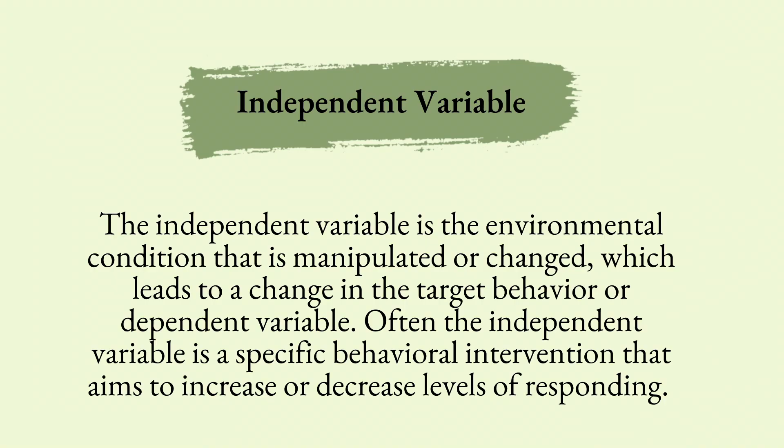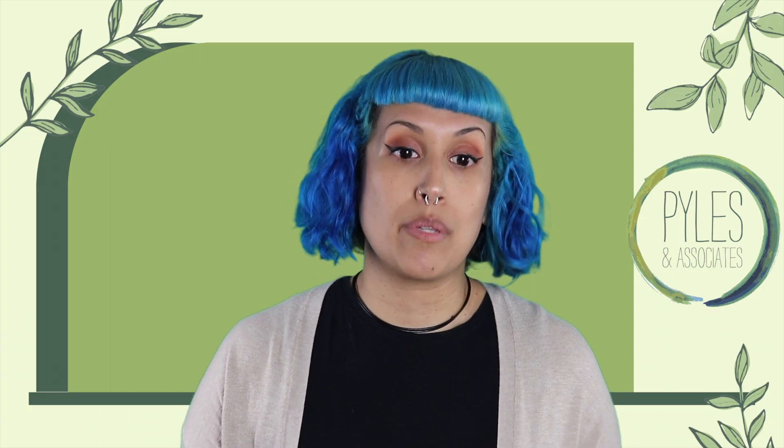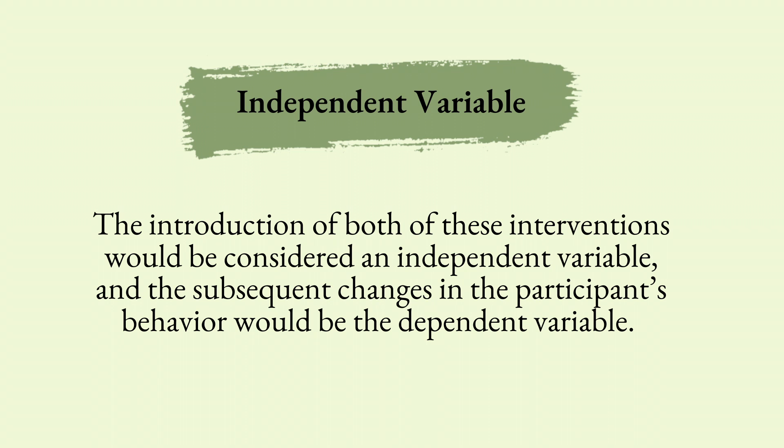Now let's move on to the independent variable. This is the environmental condition that's going to be manipulated or changed, which leads to change in the target behavior — our dependent variable. Often the independent variable is a specific behavioral intervention that aims to increase or decrease a disruptive behavior, or it can target an independent living skill. For instance, you might implement a DRO procedure introduced as an intervention to decrease a disruptive behavior, or a teaching procedure introduced to increase how often a client asks social questions. The introduction of both of these interventions would be considered your independent variable, and the subsequent changes in the participant's behavior would be the dependent variable.